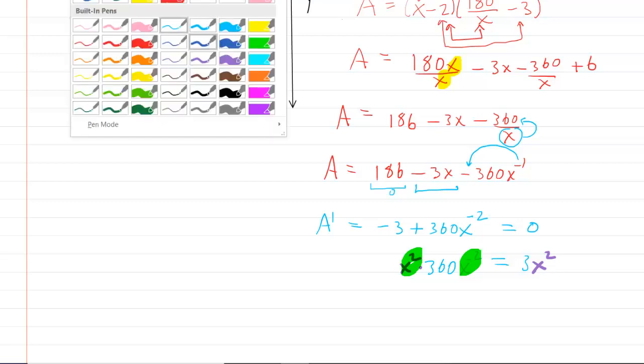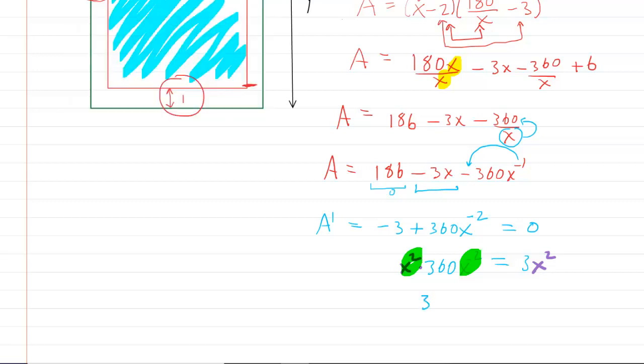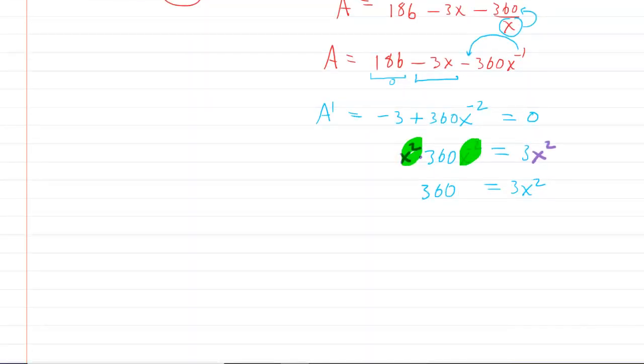Any quantity raised to the power of 0 is 1. So you are left with just 360 times 1, which is 360. And this equals 3X squared. Divide both sides by 3 and you get 120 is equal to X squared. And finally take the square root on both sides and you get X is equal to the square root of 120.